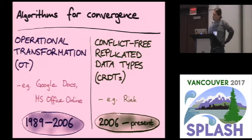The algorithms that we've been looking at are a more recent thing that has only come up within the last decade or so. They're called conflict-free replicated data types, or CRDTs for short.